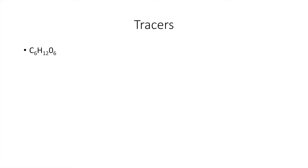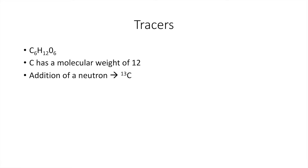So how do we separate the endogenous and the exogenous carbohydrate oxidation rates? For this we need to introduce the concept of tracers. So here you see the molecular formula of glucose again. It has six carbon atoms and carbon has a molecular weight of 12. However, in nature a very small percentage of all carbon atoms has one additional neutron — and then it doesn't have a molecular weight of 12, but a molecular weight of 13. These carbon atoms are functionally identical, so they do exactly the same thing. The only difference is that they weigh a little bit more, and because they weigh a little bit more, we can separate them.